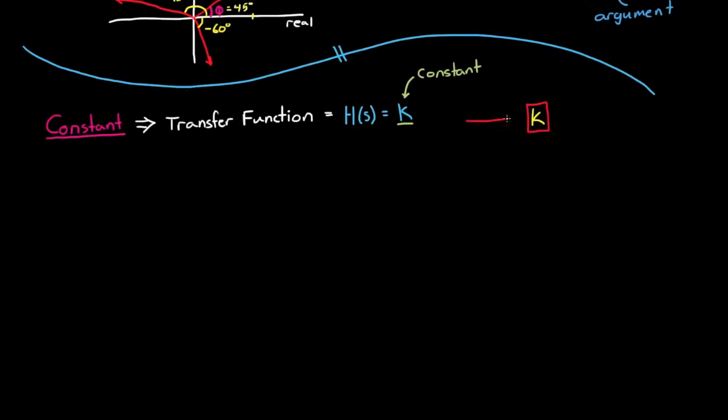We can represent this in block diagram form by showing that the input gets multiplied by k and becomes the output. Or u is the input and y is the output.